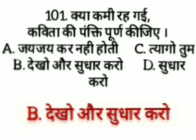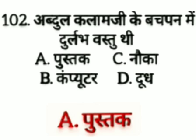Kya kami raha gai — kavita ki pankti poori karo — option A: jai jai kar nahi hoti, option B: dekho aur sudhar karo, option C: tyagotum, option D: sudhar karo. The answer is option B, dekho aur sudhar karo.